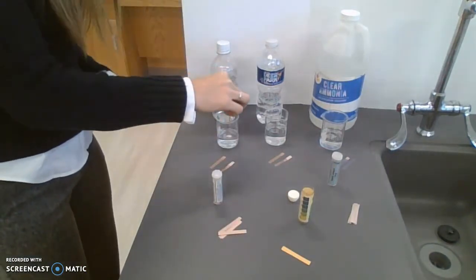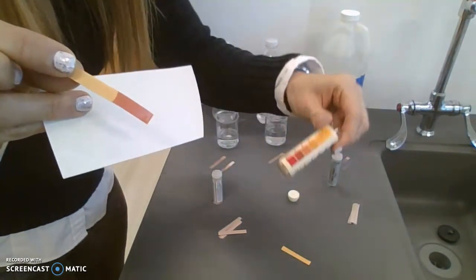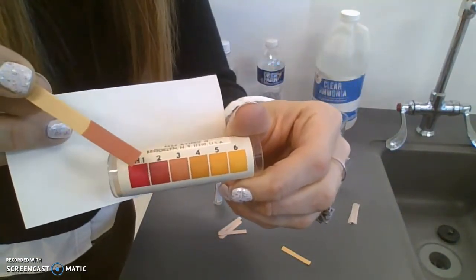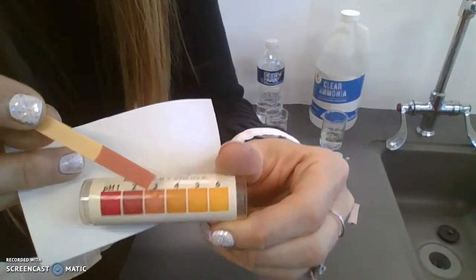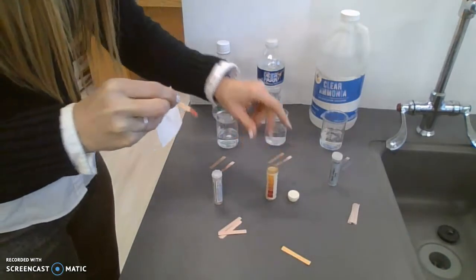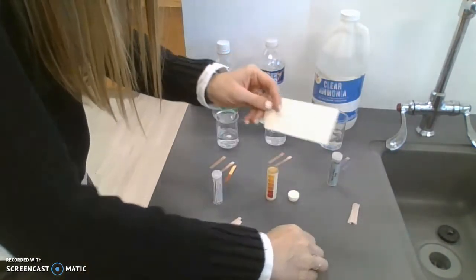The yellow litmus in the vinegar shows this color red. Match it up here and say, okay, this is close to a pH of 3 for our vinegar.